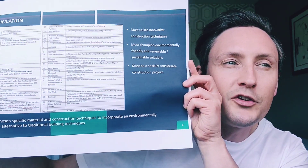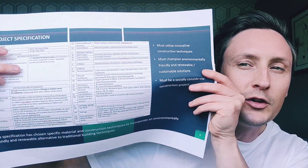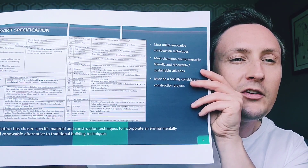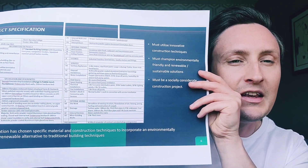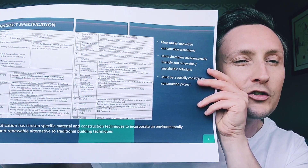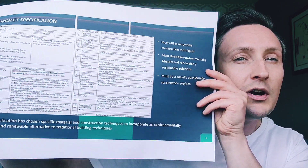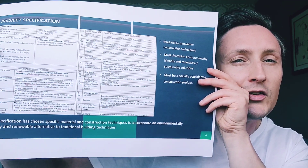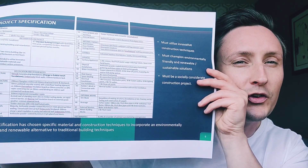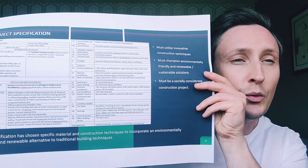The next thing I did was produce a project specification which identifies all the elements required for the build. The specification has chosen specific materials and construction techniques to incorporate an environmentally friendly and renewable alternative to traditional building techniques. The site must utilise innovative construction techniques, champion environmentally friendly and renewable sustainable solutions, and must be socially considerate whilst construction is underway.